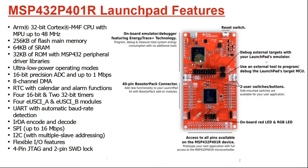If you look at the features of the MSP432P401R, it is based on an ARM Cortex-M4 with a floating point unit. It is also based on a 32-bit microcontroller with an MPU — that is Memory Protection Unit — and we can have a clock frequency up to a maximum of 48 MHz.